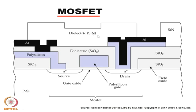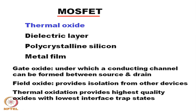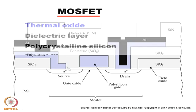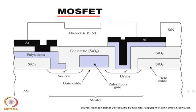Today's topic is oxidation. From this viewgraph we can see that there are different types of layers used for making a discrete device or an IC: gate oxide, field oxide, polysilicon gate or some dielectrics, and finally metal layers. So far as thermal oxide is concerned, it can be field oxide or gate oxide, as is evident from this viewgraph.